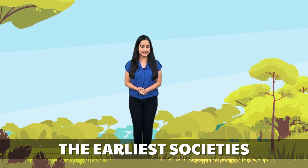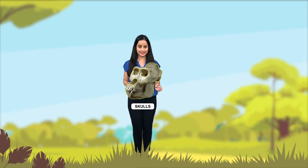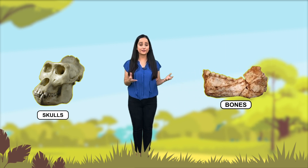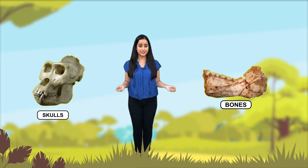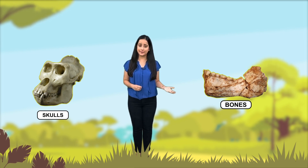Chapter 2: The Earliest Societies. We are not sure as to when exactly man as we know him came into being. Anthropologists have discovered skulls and bones of creatures which seemed to be neither of a man nor of an ape.